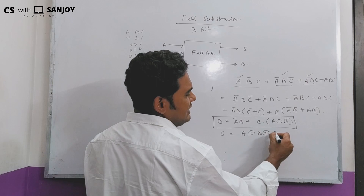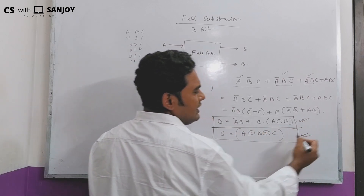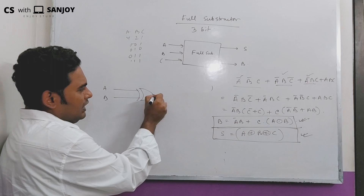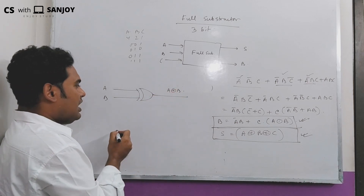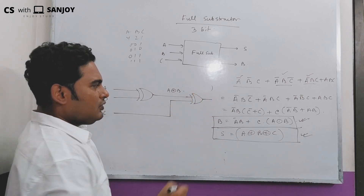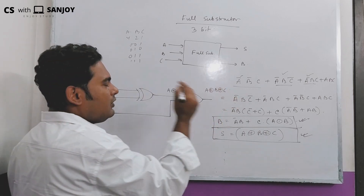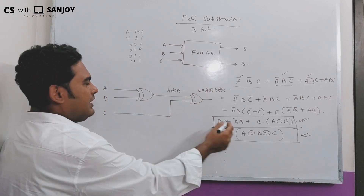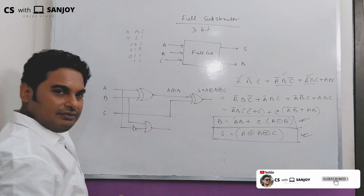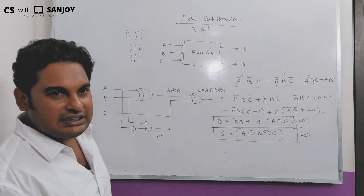The difference output is A exclusive-OR B exclusive-OR C. Let's check: A and B — they exclusive-OR, giving A XOR B, then XOR with C gives A XOR B XOR C. For the borrow output: A-bar B is part of the expression, with the exclusive-OR terms.